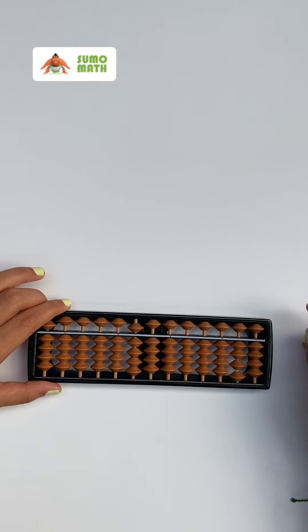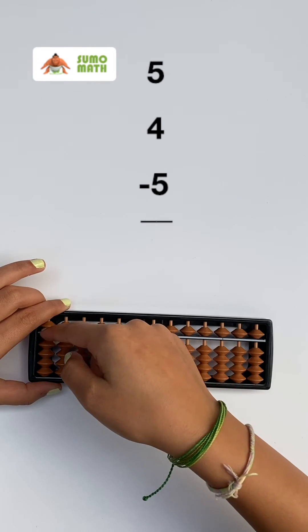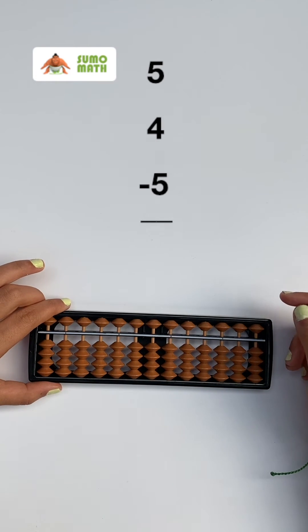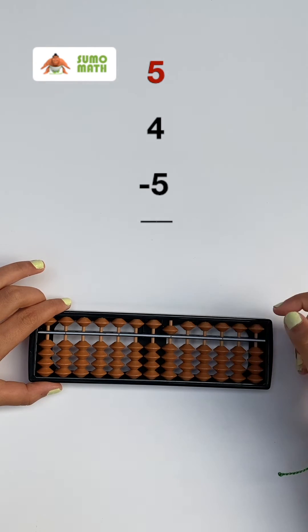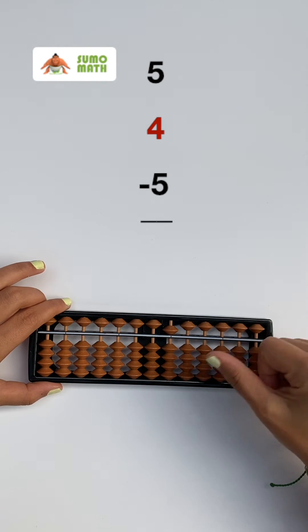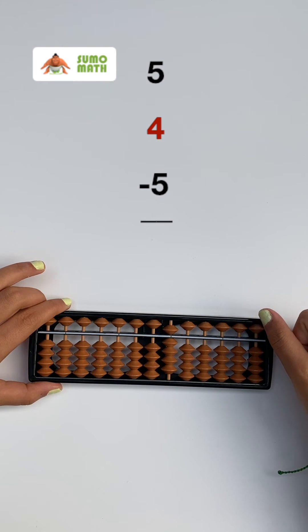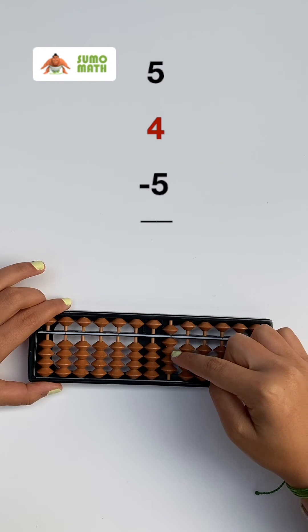Last time, we learned how to add 5. Let's practice it again by adding 5 plus 4. So, we move the heavenly bead to the reckoning bar with the index finger, and then add 4 by moving the 4 earthly beads up. Now, we have 9 on the abacus: 5, 6, 7, 8, 9.